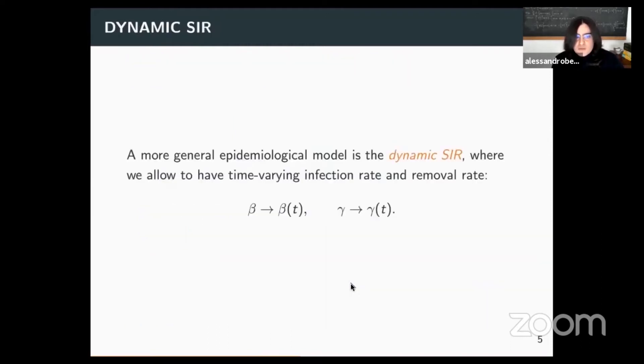In what follows, we will consider a slight generalization of this epidemiological model, which is known as dynamic SIR, where we assume that the infection rate and removal rate can have temporal variation. So we allow for extra flexibility to model changes in the way in which the infection grows.